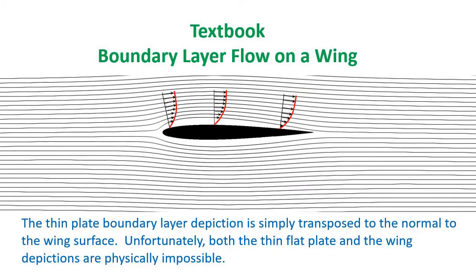For flow over a wing, the thin flat plate boundary layer depiction is simply transposed to the normal to the wing surface. Okay, so some of you will have trouble believing what I'm about to say, but it is true, and we will discuss it in detail, and you can decide for yourself.